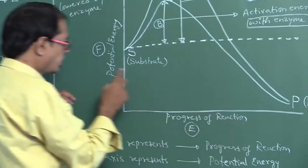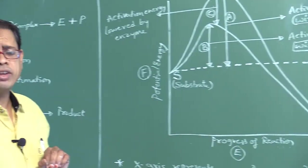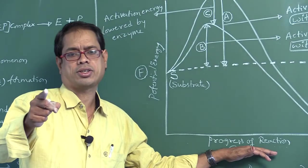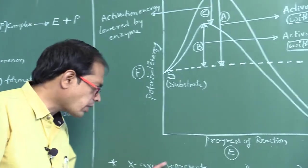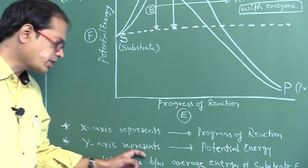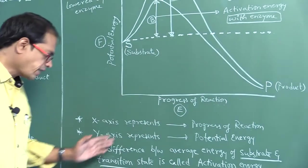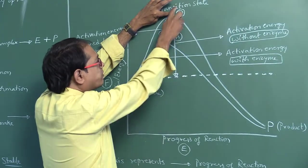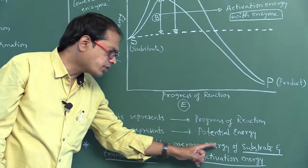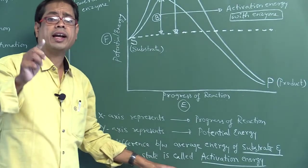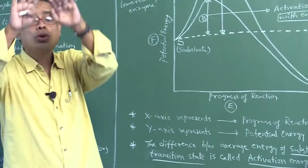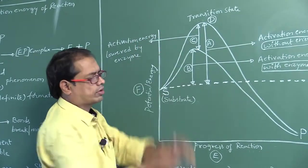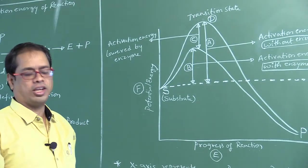To explain activation energy, the X axis represents progress of reaction and the Y axis represents potential energy. Activation energy is the difference between the average energy content of the substrate and that of the transition state. In absence of enzyme, more activation energy is present; in presence of enzyme, less activation energy is required. We use enzymes to lower the activation energy.